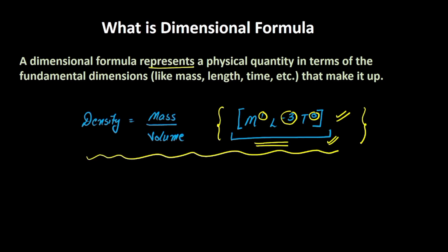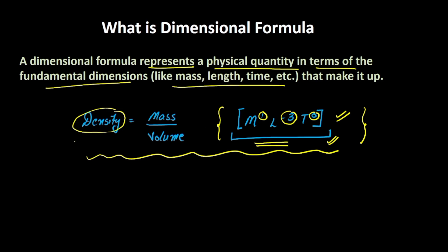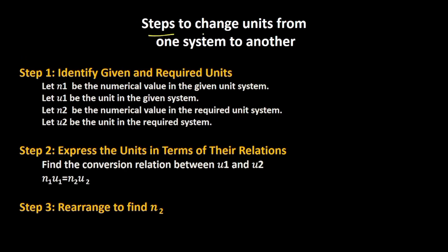A dimensional formula represents a physical quantity in terms of the fundamental dimensions. In this example, density is the physical quantity, and mass, length, and time are the fundamental dimensions. In this video, we will understand how this dimensional formula can help us change the units from one system to another. Let's understand the steps to do this.